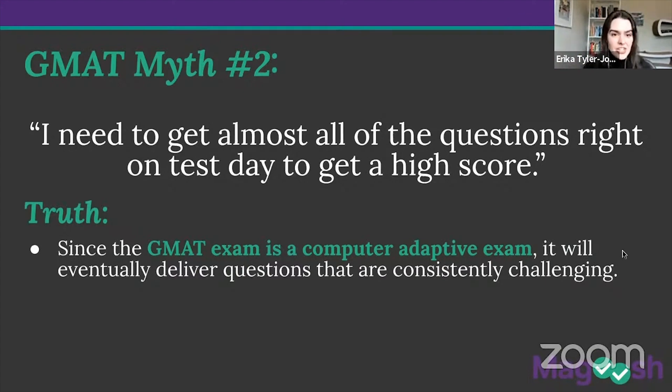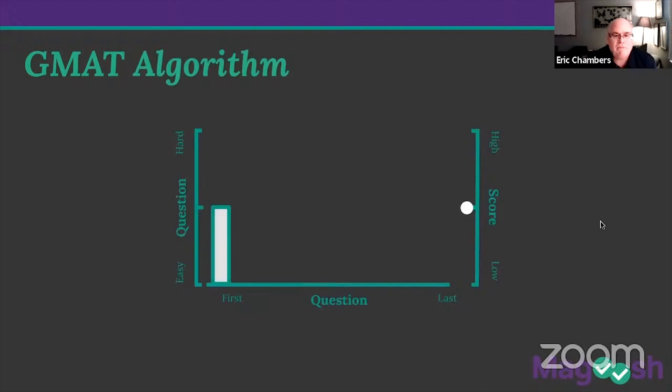So this seems like a good time to go through the algorithm and what makes this test so different. Yeah, that'd be great. This is sort of look at first question to last question. And if you think about easy to hard questions and how they're scored, those wouldn't be comparable. It makes sense. So the harder the question, the higher the score. In this situation, what we do with every candidate is we serve up a middle tier question to everyone. So that's what that little white dot is over there.